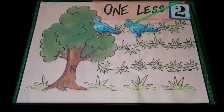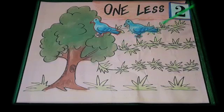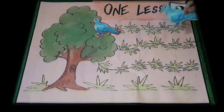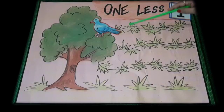Two peasants on a tree. One flew to eat something, rest was left one. When one is minus from two, it becomes one.